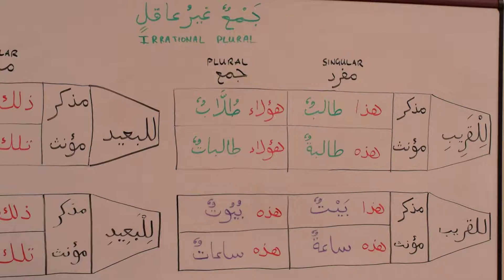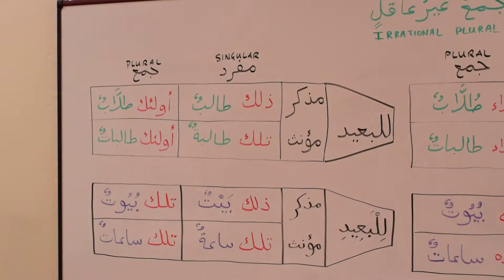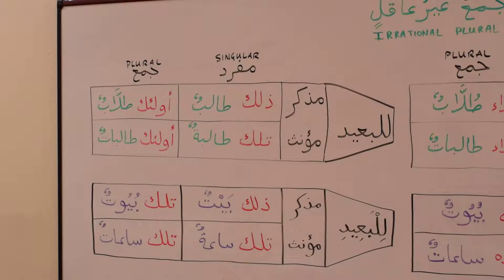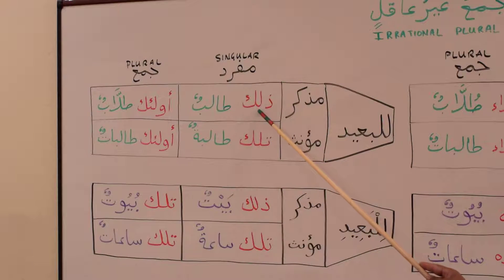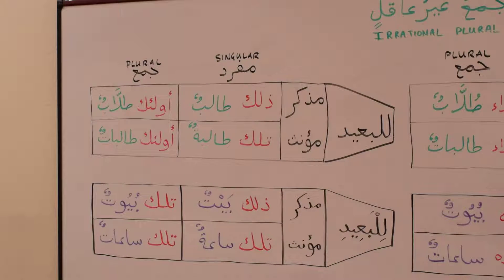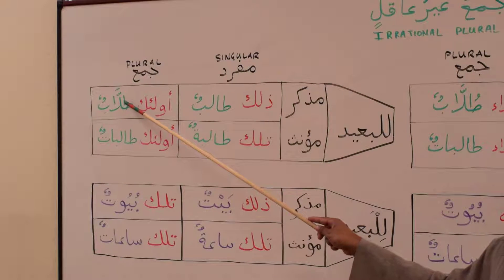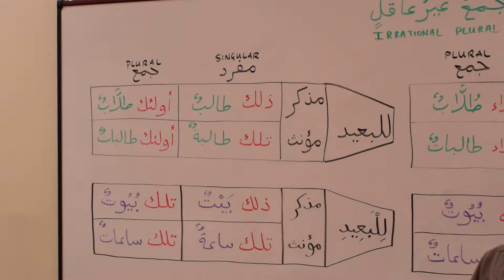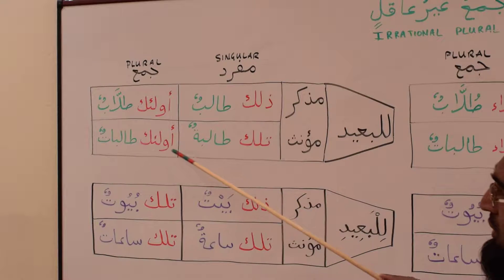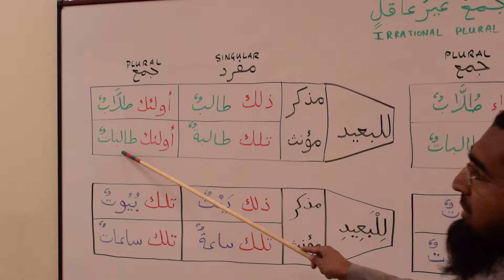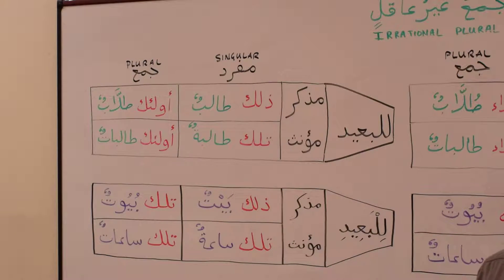Now let's go to the اسماء الاشارة للبعيد — for something that is far, we say 'that is' or 'those are.' For the مذكر, we say ذلك طالب — that is a (male) student. Then we say تلك طالبة — that is a female student — because تلك is مؤنث and ذلك is مذكر. When we pluralize طالب to طلاب we say أولئك طلاب, and when طالبة becomes طالبات we say أولئك طالبات. That is nothing new — we have learned that already.